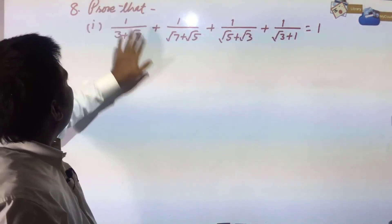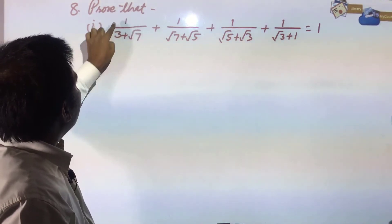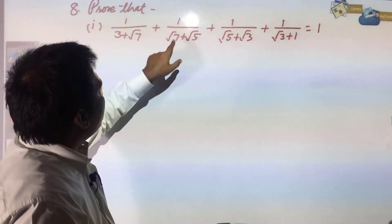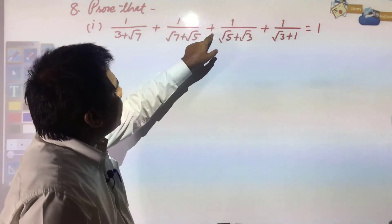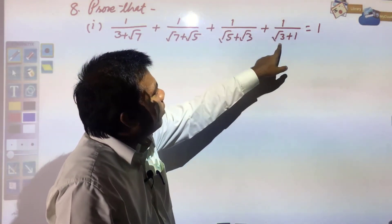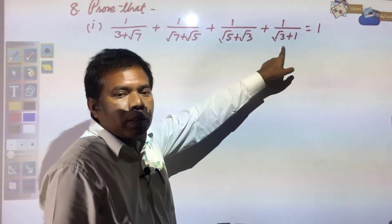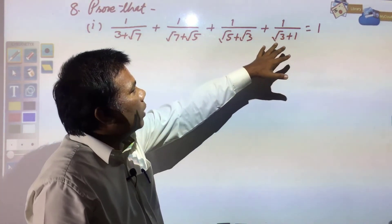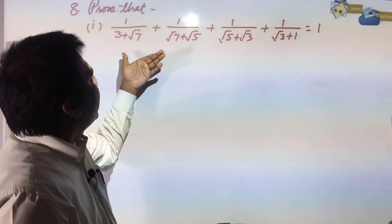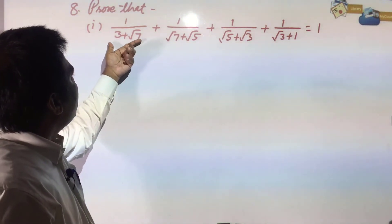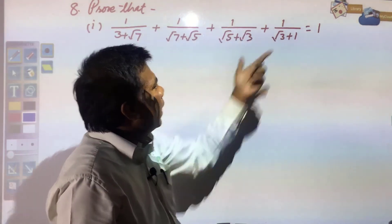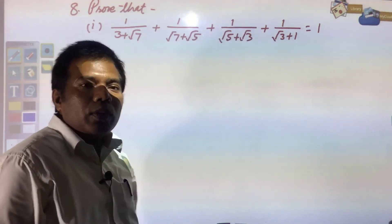Next question: prove that 1/(3 + √7) + 1/(√7 + √5) + 1/(√5 + √3) + 1/(√3 + 1) = 1. The same thing is required — rationalize the denominator and then simplify.